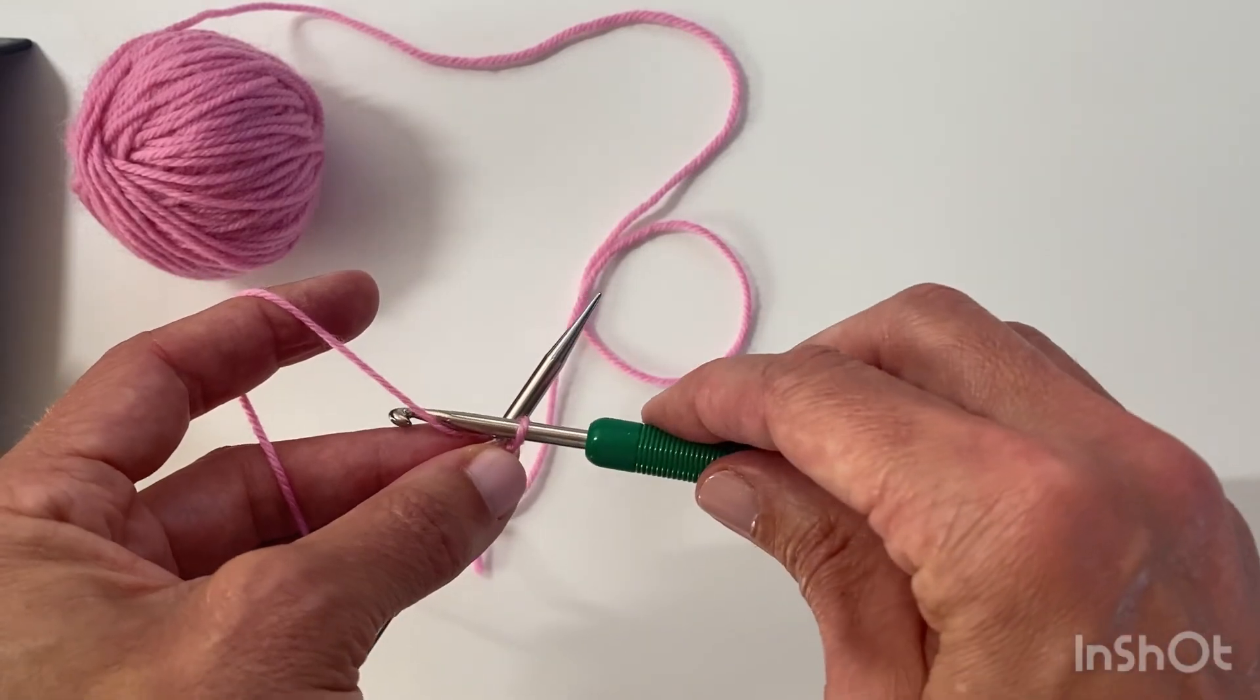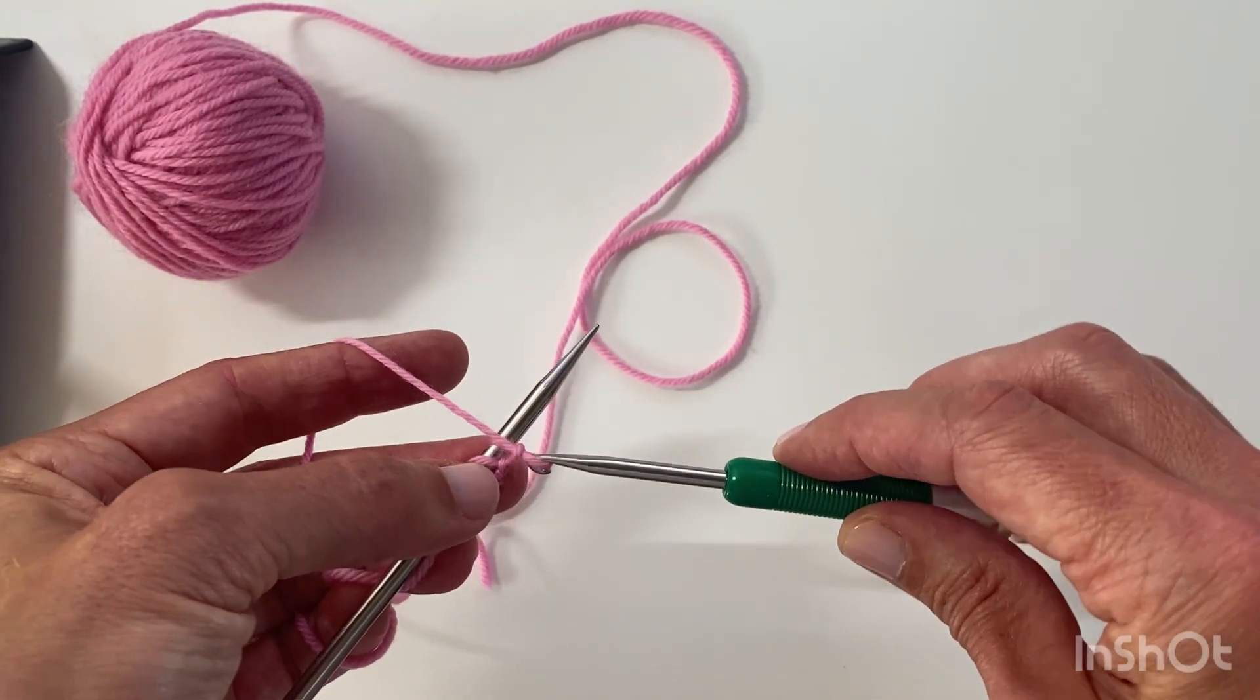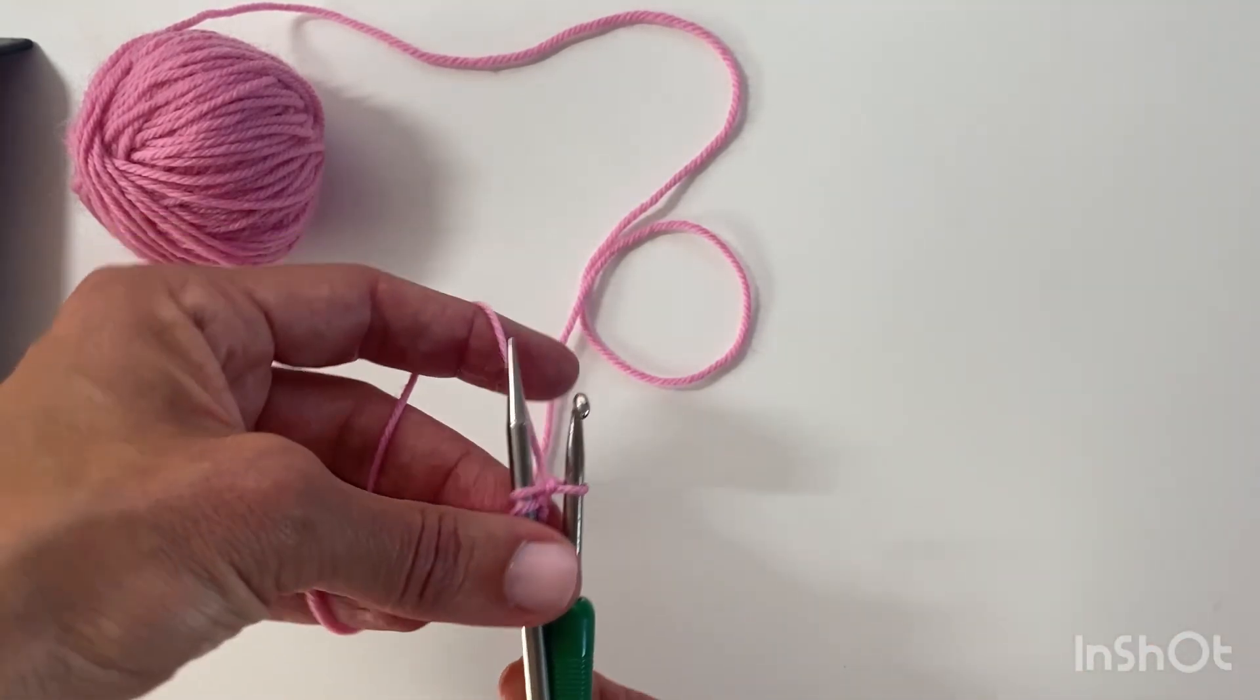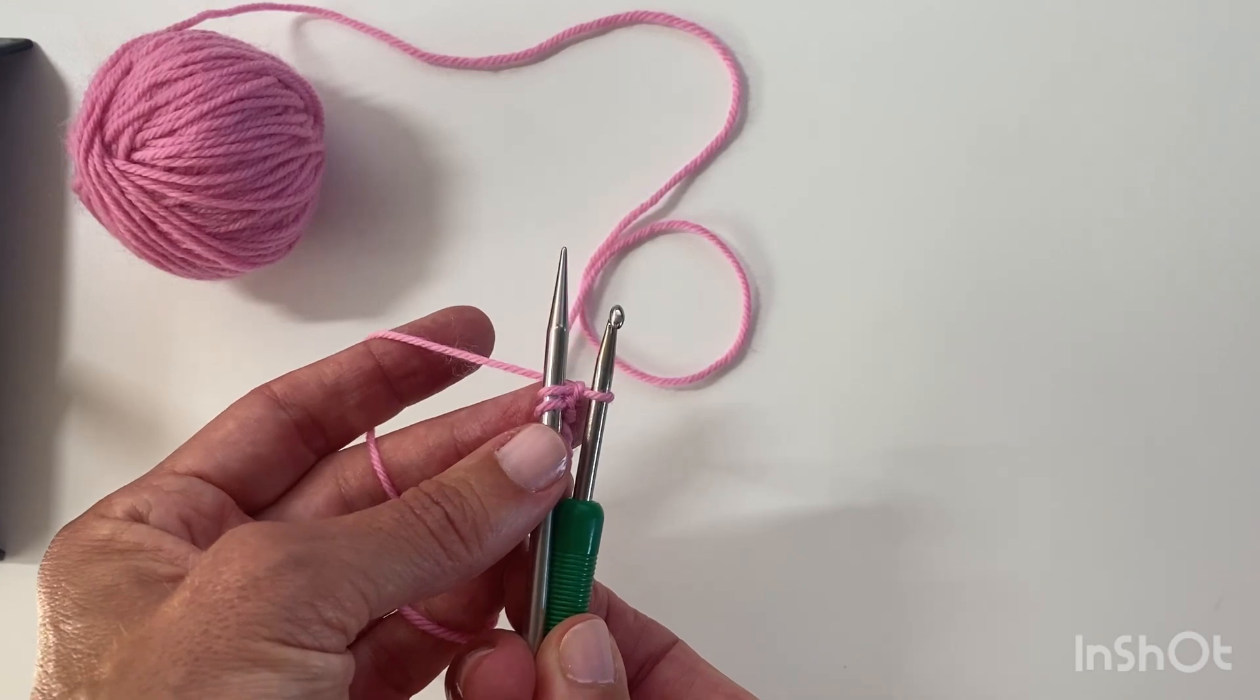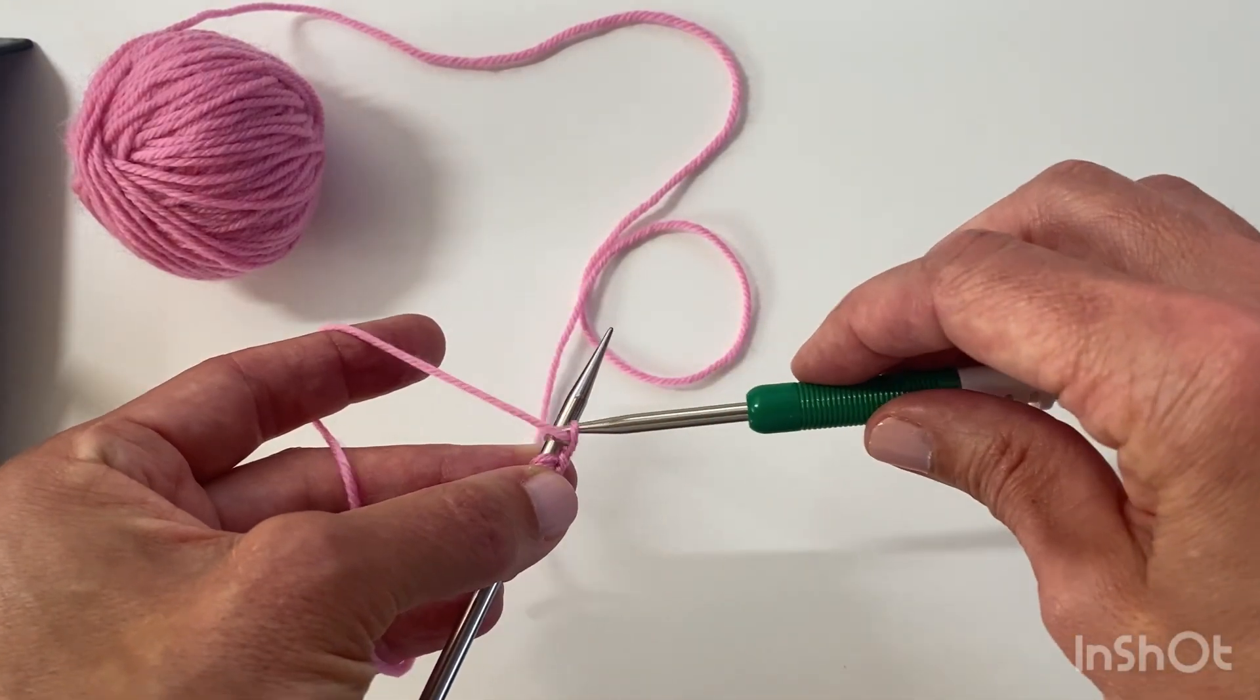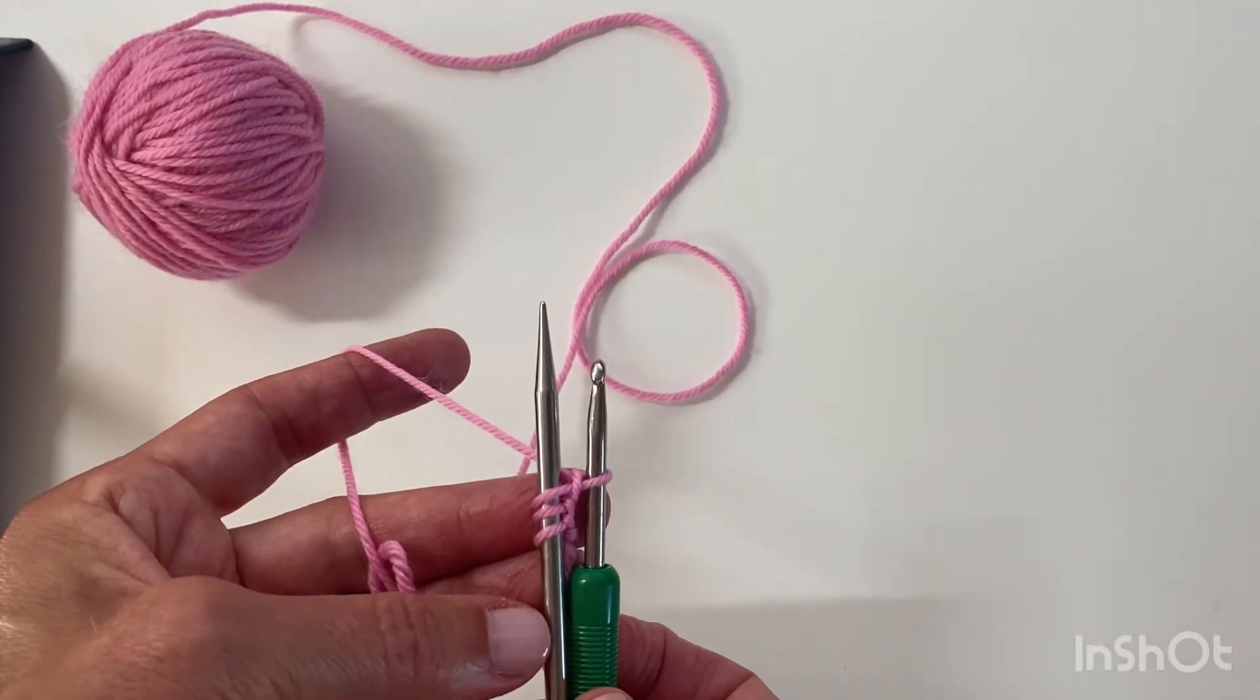So I'll take the crochet hook and collect the yarn from the left hand, and then move the yarn to the back of the needle. Take the crochet hook and pull through that loop, and then move the yarn to the back of the needle.